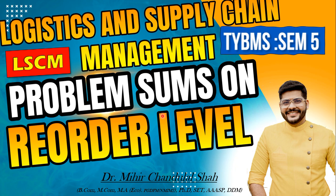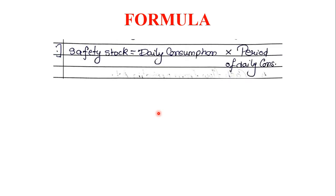First, we will note down the formulas. The very first formula required is called Safety Stock. The formula for Safety Stock is: Safety Stock = Daily Consumption × Period of Daily Consumption. Daily Consumption will be given in the question — for example, 1,000 units, 500 units, 400 units consumed in a day. Safety Stock will be maintained at 2 days or 3 days of consumption, so the period is also given. We multiply these to get the Safety Stock value.